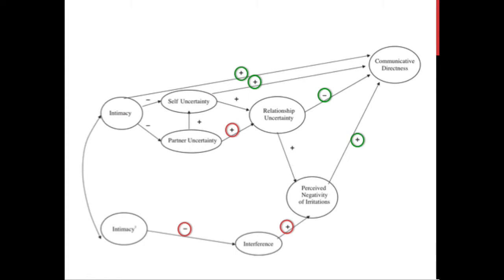The red circles represent the two unsupported hypotheses. The first deals with the relationship between partner uncertainty and relationship uncertainty — it was hypothesized that relationship uncertainty would mediate the interaction between partner uncertainty and communicative directness, positing a positive relationship between partner uncertainty and relationship uncertainty, which was not found. The other unsupported mediating path was that partner interference would mediate the relationship between intimacy and perceived negativity of interactions; both the negative relationship between intimacy and interference and the positive relationship between interference and perceived negativity were not found.